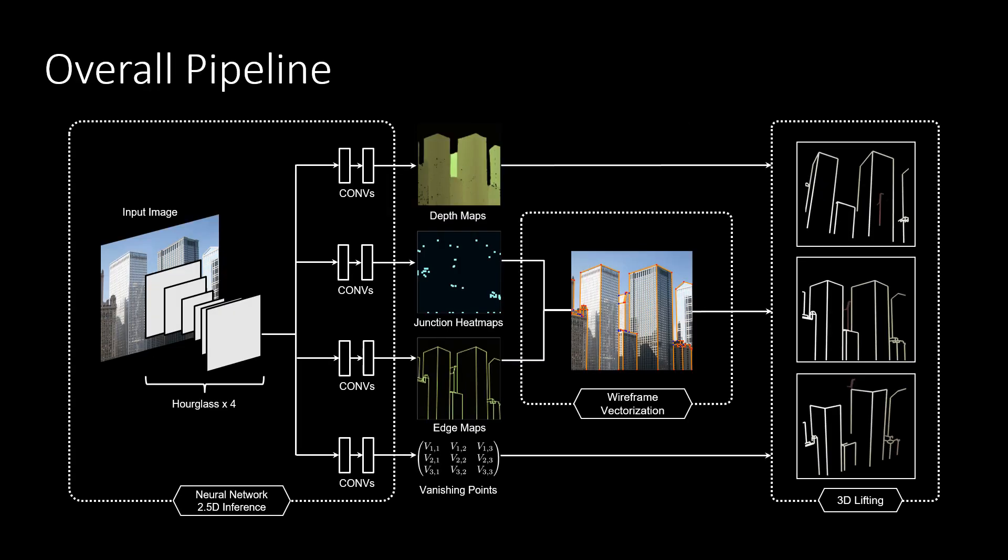Our pipeline starts with a neural network that takes a single RGB image and jointly predicts multiple 2D heat maps, from which we vectorize lines and junctions to form an initial wireframe. Using both the depth and vanishing points estimated from the same network as prior, our method lifts the 2.5D wireframe to a full 3D wireframe.